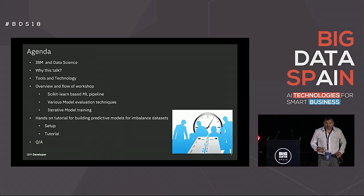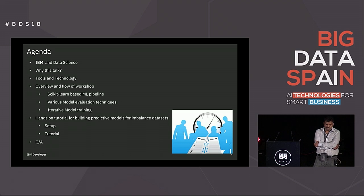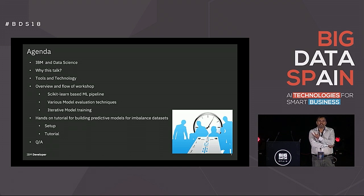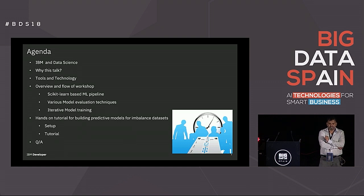So what's our agenda? We're going to talk about IBM and its commitment to data science and what IBM is doing. The second most important question is what are you going to take home from this talk — we're going to spend a small amount of time on that. And then we'll cover what tools and technology we're going to use. Pretty much we're going to address three main issues here.